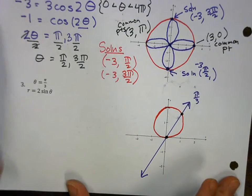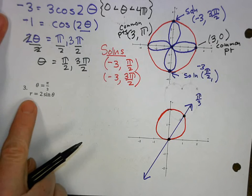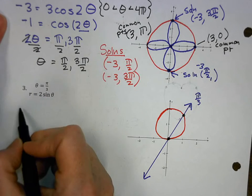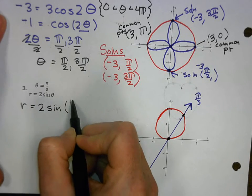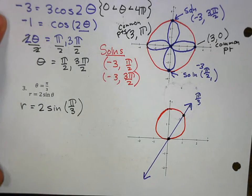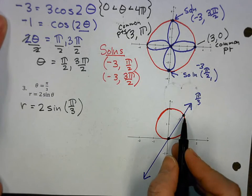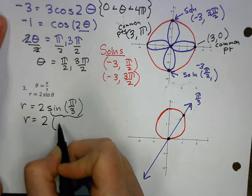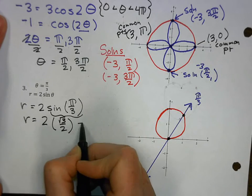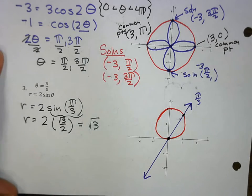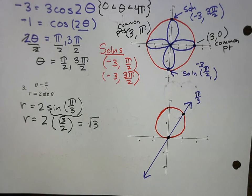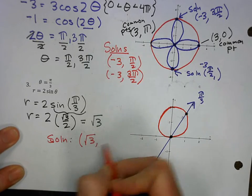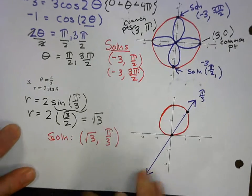I can't substitute the pi over 3 in here, because it's not r. But I can put it here. R equals 2 sine pi over 3. When I think about pi over 3, I know that the sine value is radical 3 over 2, right? Makes a triangle radical 3 over 2. So r equals 2. The sine of pi over 3 is radical 3 over 2. When I multiply those together, I get r is radical 3. So my solution, you see, I have a theta and an r. My solution is radical 3 pi over 3.